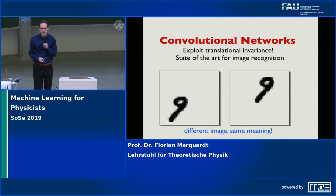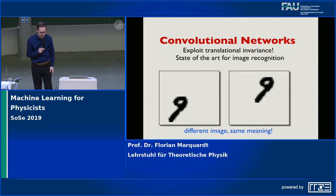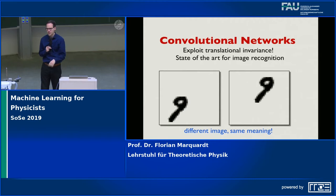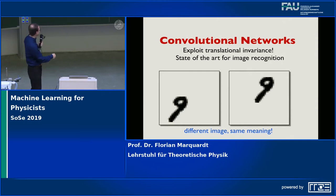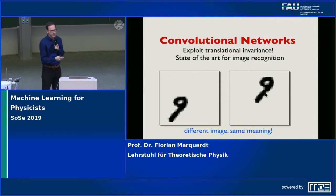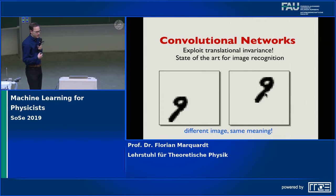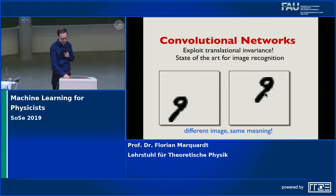Now I want to switch to convolutional networks. This is really important and very much connected to physics. Convolutional networks take their name from the mathematical operation of convolution. Their application domain is that they are very good when you have translational invariance, as in our digit example: if the digit nine is shifted to another part of the image, it is still the digit nine, so the label should be the same. These networks exploit this fact, need much less memory, and are very powerful — really the state of the art for image recognition.